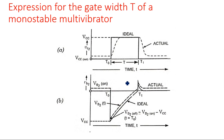We assumed a stable state where Q1 is in OFF state and Q2 is in ON state. Since the second transistor is in ON state, we apply a negative-going pulse at the base of transistor Q2, which makes the transistor come into OFF state — but only for a small duration.